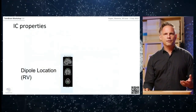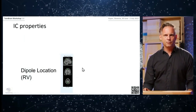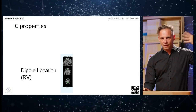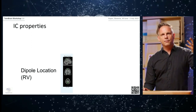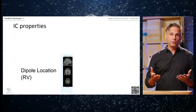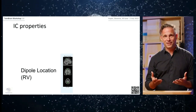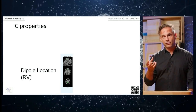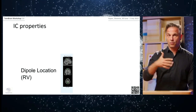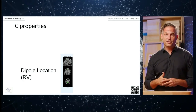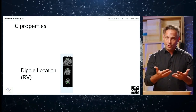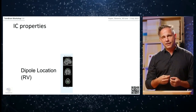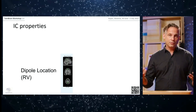Using equivalent dipole modeling, you get an approximation of where each IC's scalp map originates in the brain, giving you additional anatomical information. This allows us to say, for example, that activity most likely originates in parietal cortex, occipital cortex, or that the Bereitschaftspotential might originate in motor or premotor cortex — adding information to understand how the data relates to cognitive function.